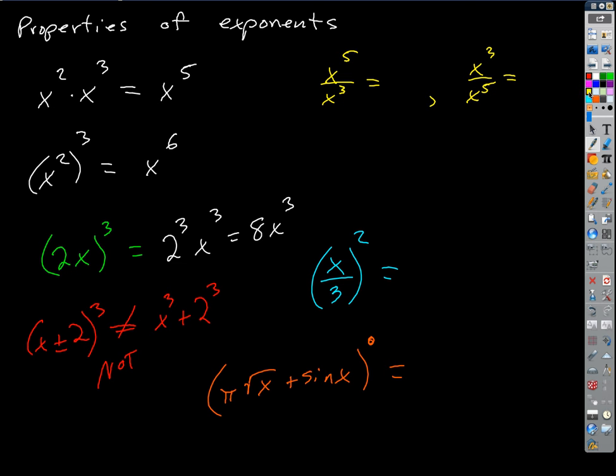What about X to the 5th divided by X cubed? That's X squared, because if you divide like bases, you subtract the exponents.